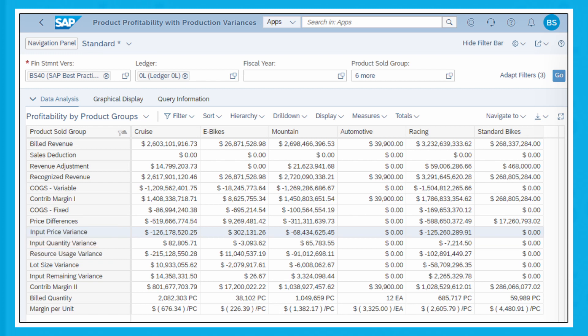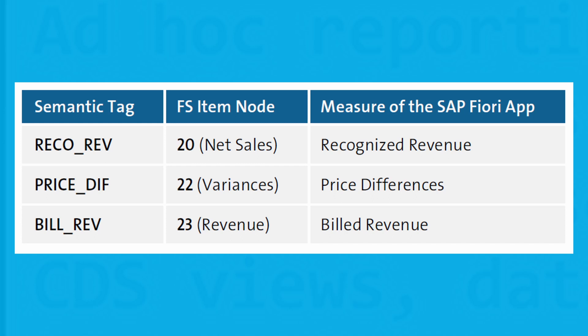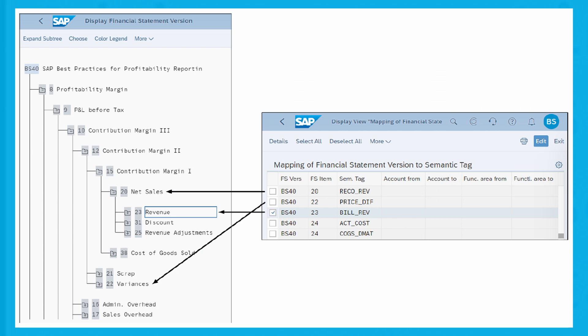In addition, we've assigned semantic tags to FS items. As highlighted, semantic tags 20, 22, and 23 are assigned to FS item nodes in FS version BS40. This table highlights the linking of the semantic tags with the respective measure on the Product Profitability with Production Variances app using FS version BS40. Similarly, you can assign many other semantic tags to other FS item nodes of the FSV, as these semantic tags represent measures within the app.